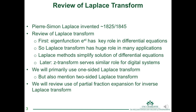An eigenfunction is that special function that when some operation is done upon it, the result of the operation has the same form as the original function, and may be multiplied by some constant. If you take the derivative of e to the st with respect to t, you end up with s times e to the st — s is the constant, but it still has that same e to the st form, hence eigenfunction.